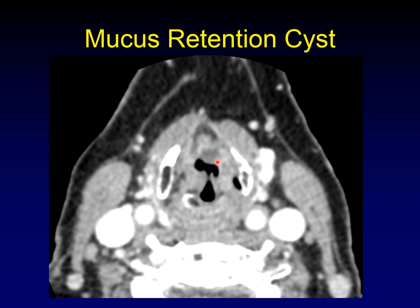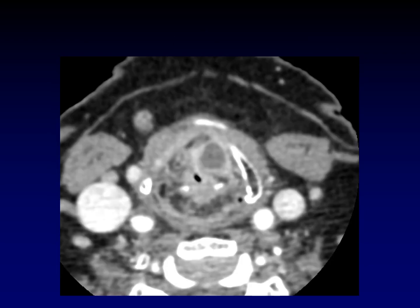Mucous retention cysts can arise along any mucosal surface, including the mucosal surfaces of the larynx itself. Here is a rounded mass sitting along the false cords anteriorly. You can see it has no intrinsic enhancement — maybe a little peripheral enhancement from surrounding mucosa, but no intrinsic enhancement within the mass. That might be a clue you're dealing with a mucous retention cyst, though the differential with squamous cell carcinoma is still very real.